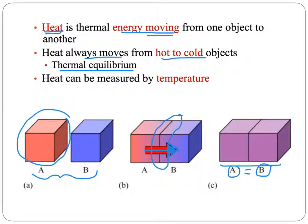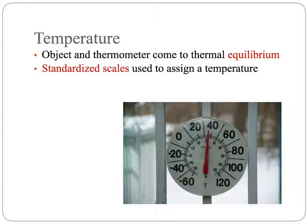As this heat moves it can be registered on a thermometer and we can measure it using various temperature scales. So in order for us to measure the temperature we have to allow time for the object and the thermometer to come to thermal equilibrium. We cannot get an accurate temperature by just tossing the thermometer into a beaker of solution and reading it right away. We have to allow it to sit and reach this point of thermal equilibrium.